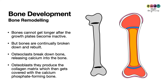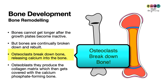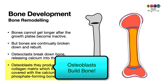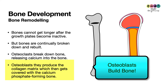Although bones stop getting longer once growth plates become inactive, bones are continually being broken down and rebuilt throughout life. Osteoclasts break down bone, releasing calcium into the blood, while osteoblasts build bone by producing a collagen matrix that gets covered over with calcium salts to form hard bone.